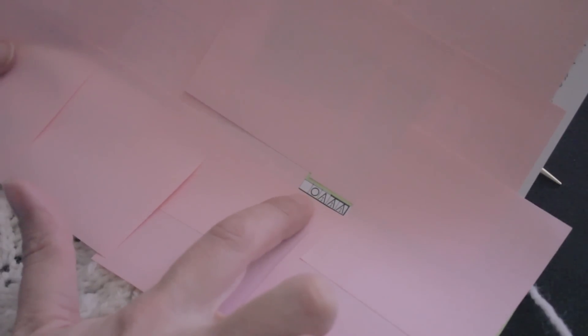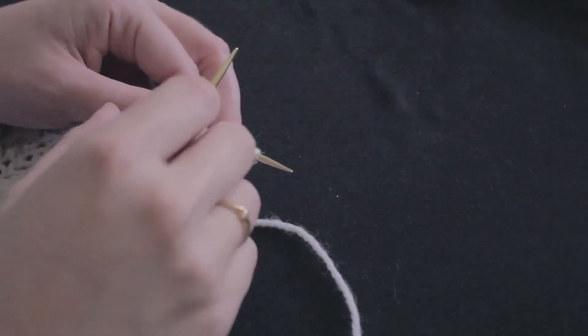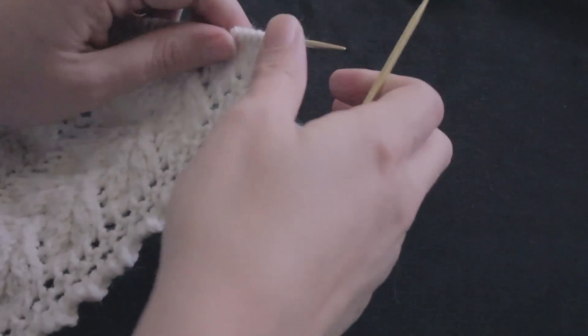So this is going to be 3 bind off, 1 yarn over, and then a knit. So this is how to proceed.